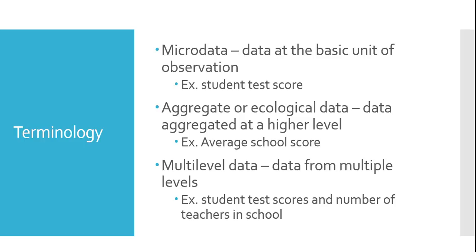When we move from microdata up to the classroom level, the school level, or the district level, we're talking about aggregate data — data that's aggregated at a higher level. An example of this might be the average test score at a school. In some cases, we will use data that mixes different levels, and this is what we refer to as multi-level data. For instance, we might have a study in which we use individual student test scores, but we also use data from the school level, such as the number of teachers in a school. With a multi-level framework, we can think about the different relationships and the ways in which the microdata interacts with or is related to data at higher levels of aggregation, making it a multi-level study.